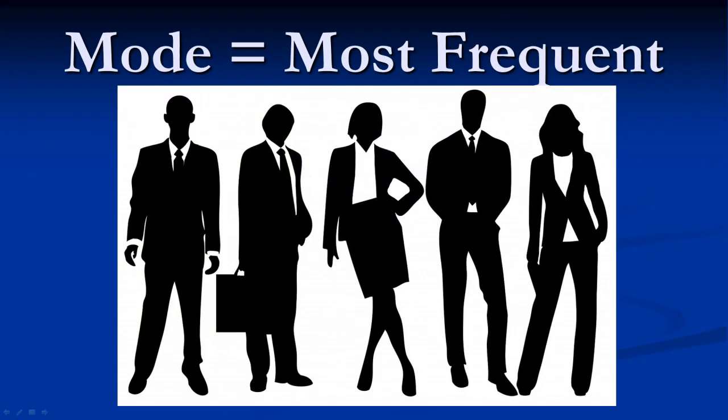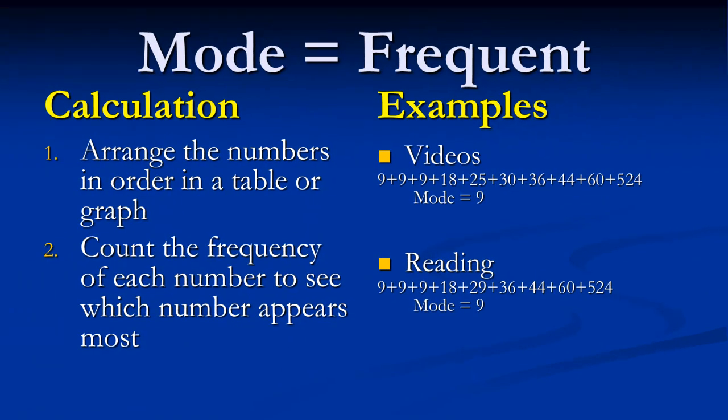The mode is the most frequent value, number, or category in a set of data. One way to remember this definition is that the mode sounds like most. Both mode and most start with the letters M-O. The mode is calculated by examining the data to see which number appears most.